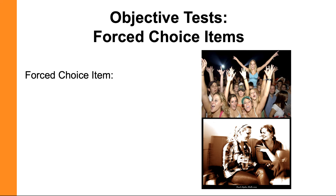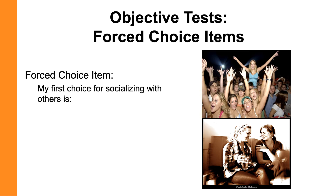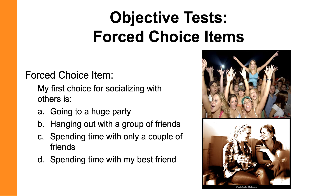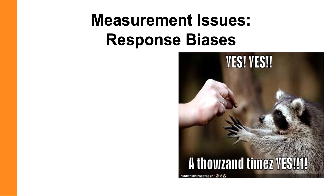Another type of question on objective tests is the forced-choice response, where you have a statement and a limited number of answers the person can choose from. This is a quick way of getting responses, but it's not ideal because the person's actual response may not be among the options. For example, it's possible that a person's first choice for socializing these days is a Zoom meeting — and that's an example of how forced-choice items may not be the most valid way to ask questions.